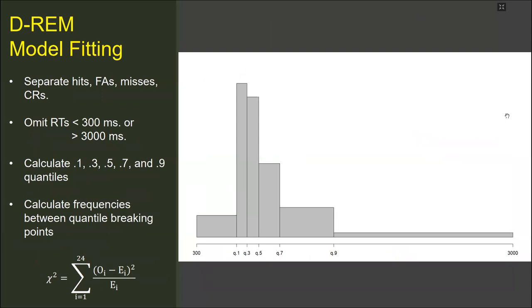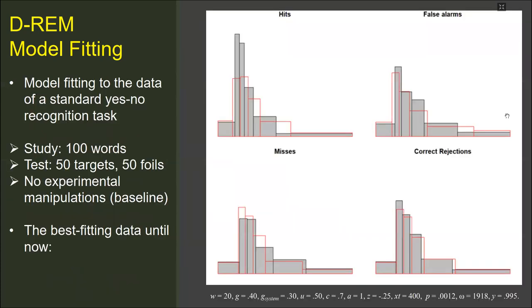What I have demonstrated was about how the parameters operate. Now, I will show you the preliminary results of the model fitting procedures to experimental data. For the standard yes-no recognition test data, I used the quantile maximum product method recommended by Ratcliff and colleagues. First, I used the data of a standard yes-no recognition test, which is taken from a study carried out in Norway. The gray bars on the figure demonstrate the response times in the experiment. The red bars demonstrate the model predictions of the best fitting simulation until now. The observed frequencies per block are very close, but the quantile predictions are significantly different, as can be seen in the graph.